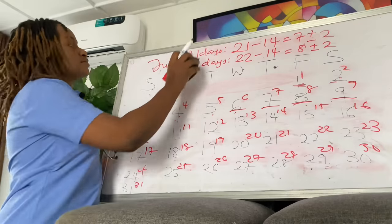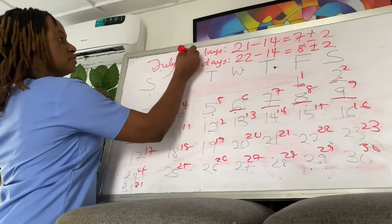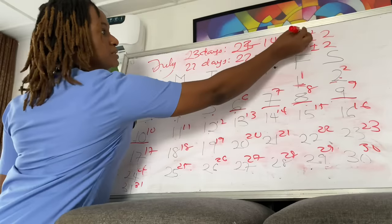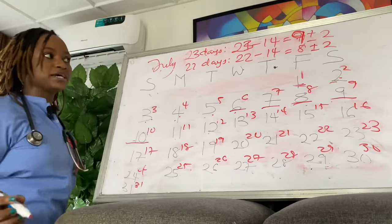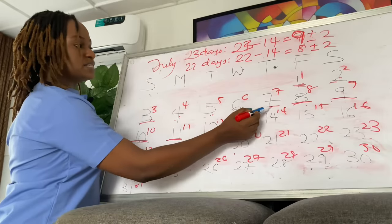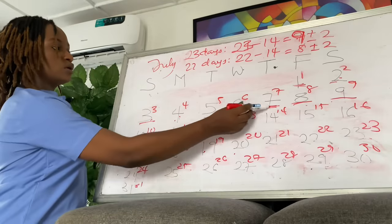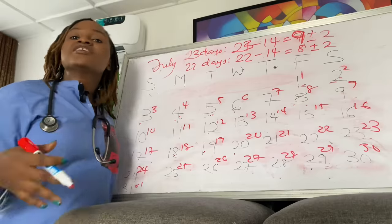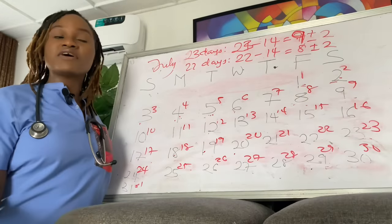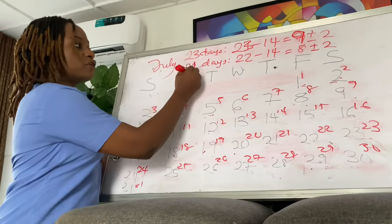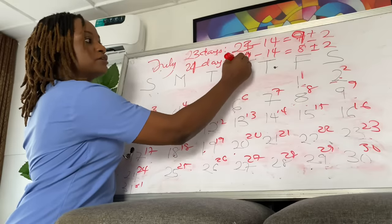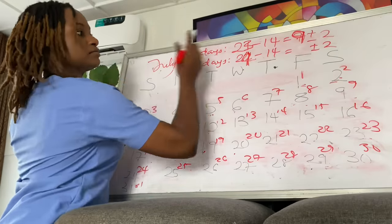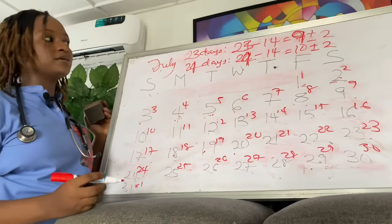For a 23-day cycle: 23 minus 14 equals 9, plus or minus 2. The earliest she can ovulate is Day 7. Counting back five days gives Day 3. So her fertile window runs from Day 3 to Day 11. For a 24-day cycle: 24 minus 14 equals 10, plus or minus 2. The fertile window is calculated the same way.